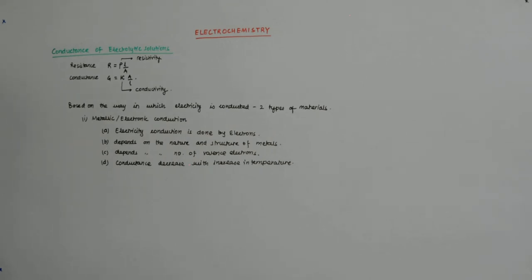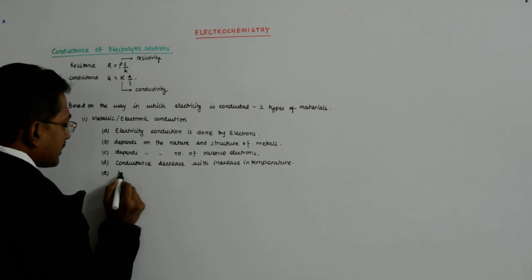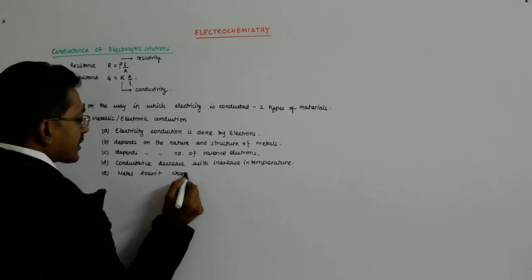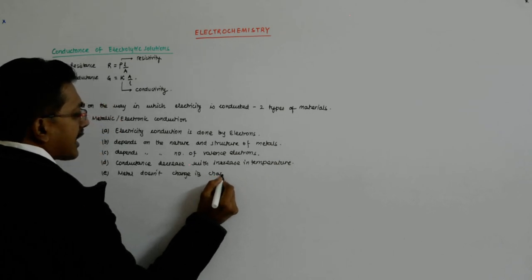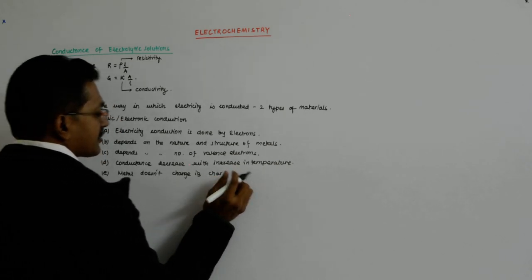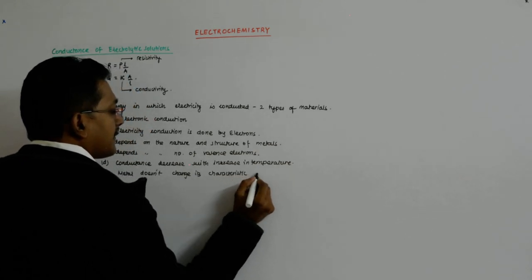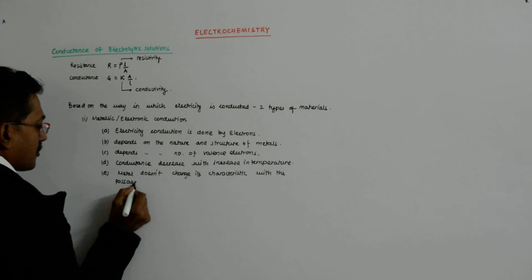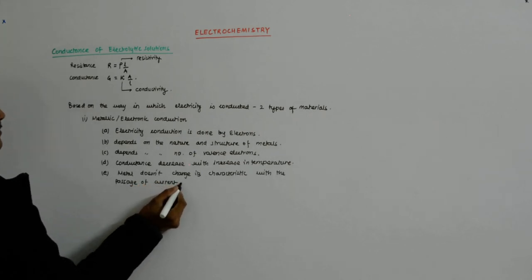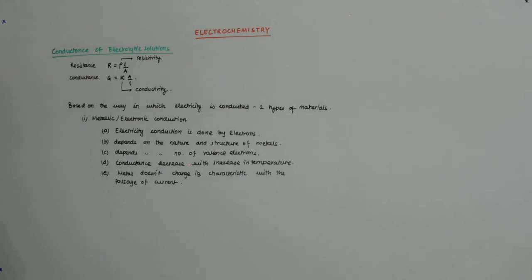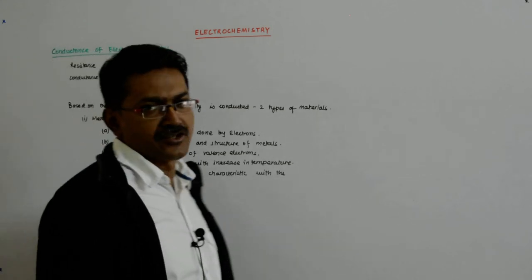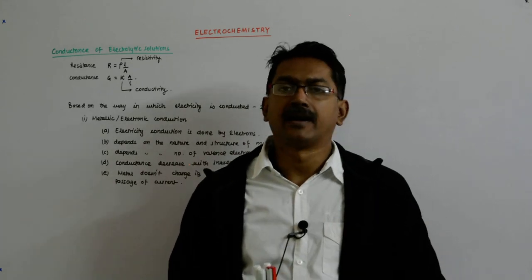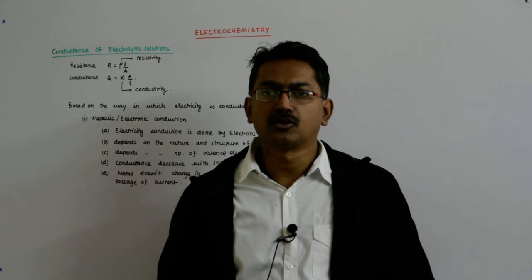One more important thing is that the metal does not change its characteristic with the passage of current. The metal does not change its nature. However long you keep passing current through, say, a copper wire, copper wire remains a copper wire. It does not undergo any chemical change whatsoever.